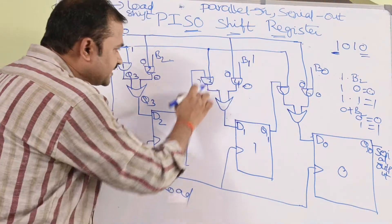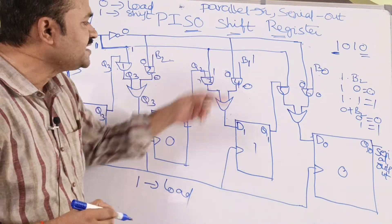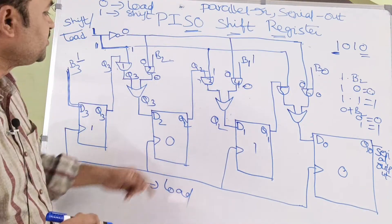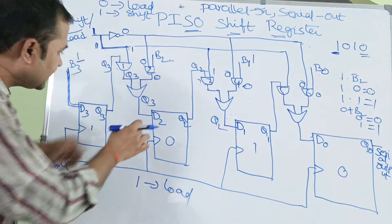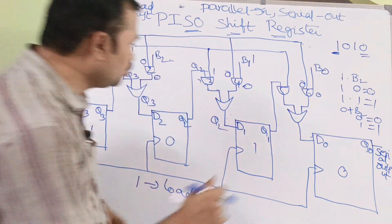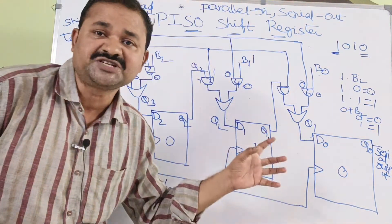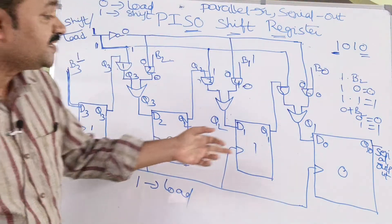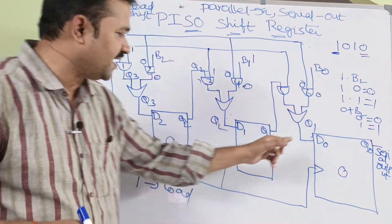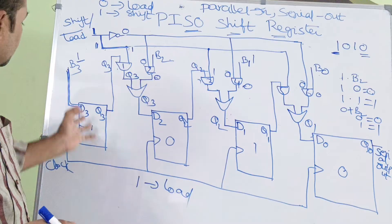The second flip-flop receives Q2 as input, the third flip-flop receives Q1, and so on. During shift operation, the rightmost bit is discarded, each bit shifts one position to the right, and a 0 is appended at the leftmost position. So the data shifts from one flip-flop to the next.